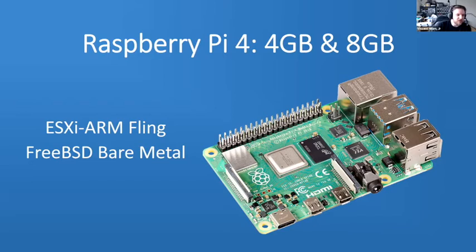They didn't want to run on a 2 GB board because that would leave maybe half a gig for a single VM, which really isn't great. Other ARM boards do work, like the RK3399 with at least 4 GB of RAM, and there's a whole slew of others they support. I believe we also have it working on the Pi 400 now — basically a Raspberry Pi 4 integrated into a keyboard.